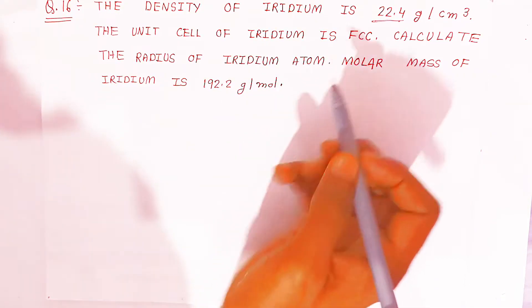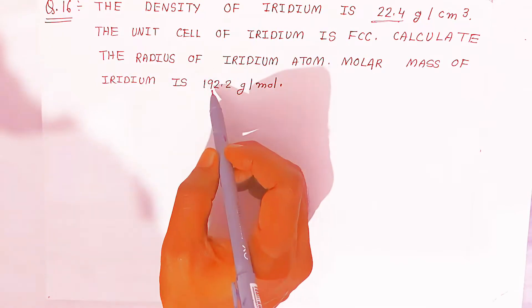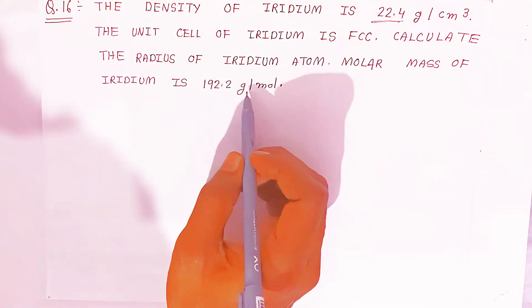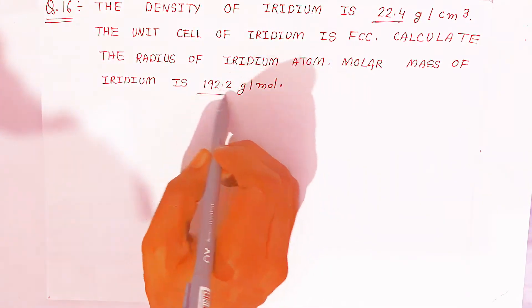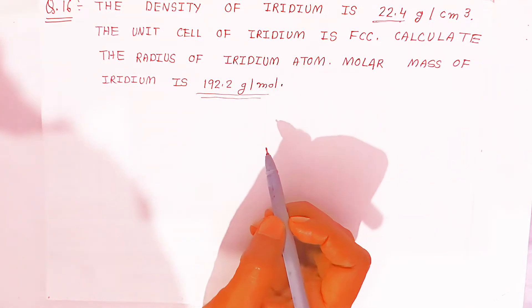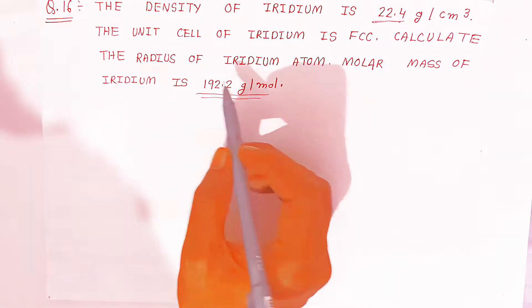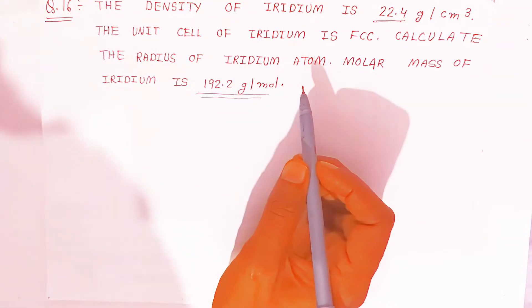The molar mass of iridium is 192.2 gram per mole. So these values are given, and with the help of these values we are going to calculate the radius of the atom.